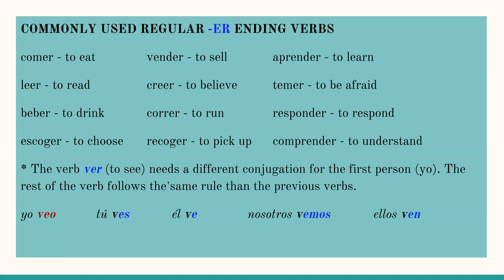Then we have here another verb — the verb ver, which means 'to see.' It's slightly different; it's a verb that conjugates differently for yo. So for yo, we are not just going to drop the ER and add the ending — you will just have to learn yo by heart because it doesn't follow the same rule. The rest of the persons follow the same procedure. But for yo, in this case, we're going to say veo. Tú ves, él ve, nosotros vemos, ellos ven.